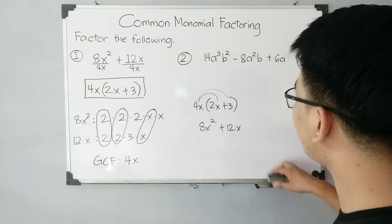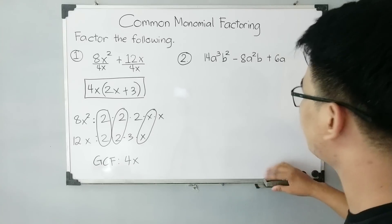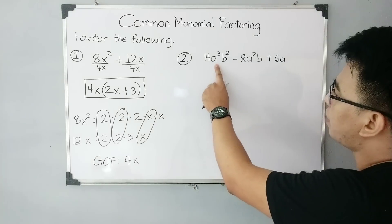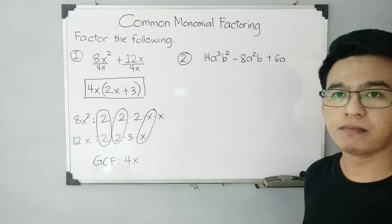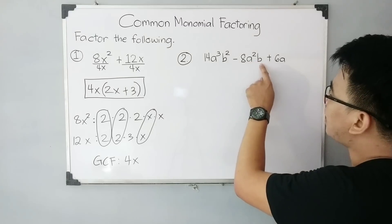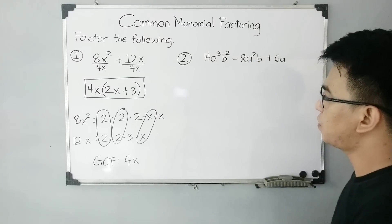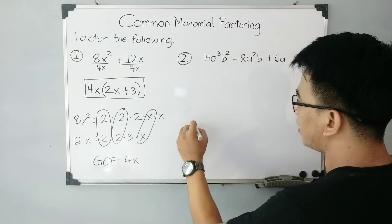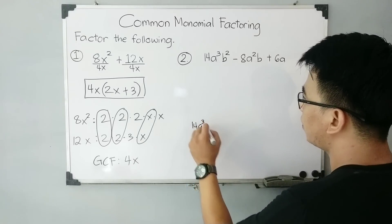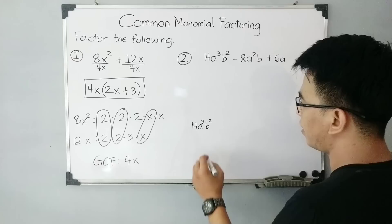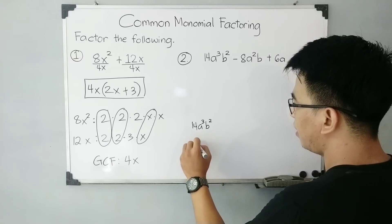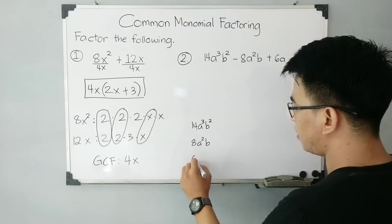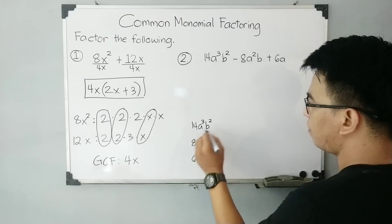Let's move on to item number 2. This one is quite long — we have 3 terms to factor out. We have 14a cubed b squared minus 8a squared b plus 6a. So we will start getting the prime factors of each term.